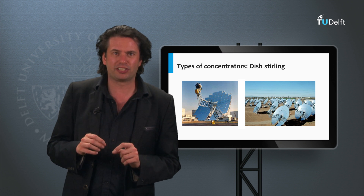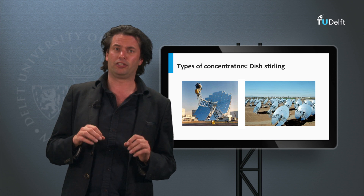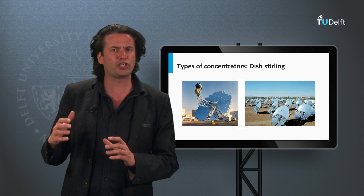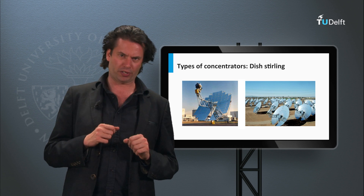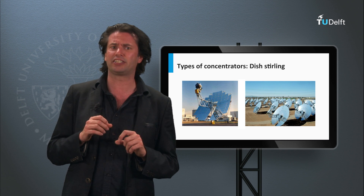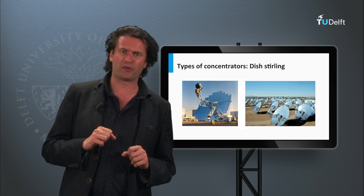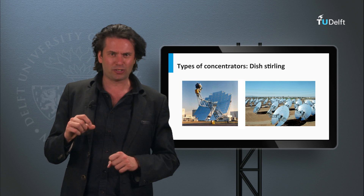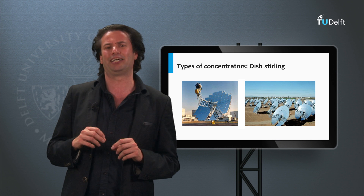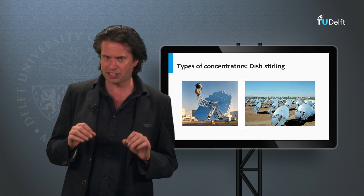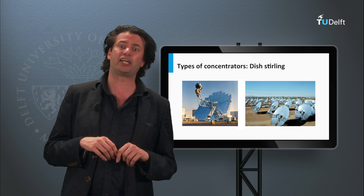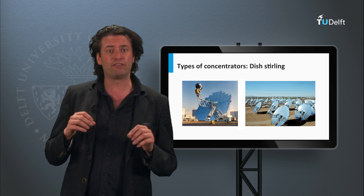Another important concentrator system is the dish-Stirling. A dish-Stirling or dish-engine system consists of a parabolic reflector that concentrates light to the reflector's focal point, where the working fluid absorbs the energy, heating up to 500 degrees Celsius and is able to operate a heat engine. These systems provide an overall efficiency of 31 percent, which is rather high. Several projects have been developed using this technology, such as the Big Dish in Canberra, Australia, or the NSTTF in Phoenix.